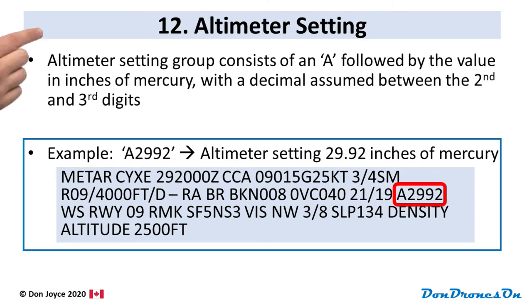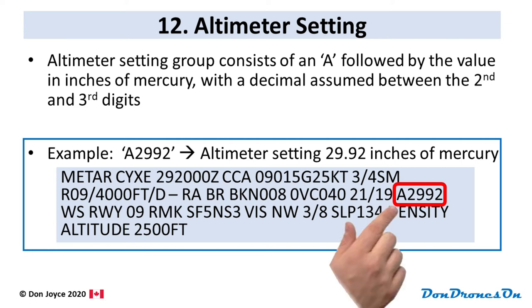The next group is called the altimeter setting — the air pressure at this location. The altimeter setting group consists of the letter A as a trigger, followed by the value in inches of mercury. There are four digits with a decimal assumed between the second and third digits. In our example, A2992 means the altimeter setting is 29.92 inches of mercury.